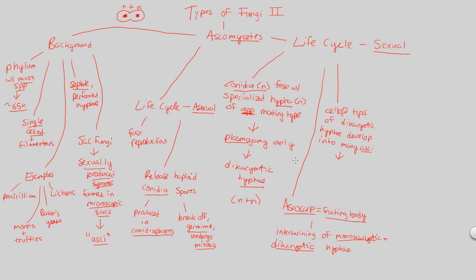If these asci do form, you will have karyogamy — this is a critical event. This is the combination of the genetic material, where you have one much bigger cell with the combination of both genetic informations, giving us a 2N diploid cell. That's karyogamy within each ascus, within each area that produces these sexually produced spores.